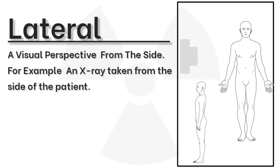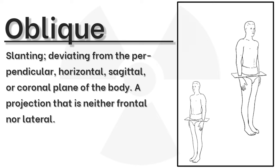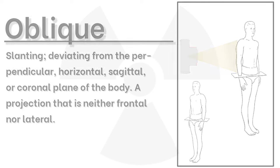Lateral: a visual perspective from the side. For example, an x-ray taken from the side of the patient. Oblique: slanting, deviating from the perpendicular, horizontal, sagittal, or coronal plane of the body — a projection that is neither frontal nor lateral.